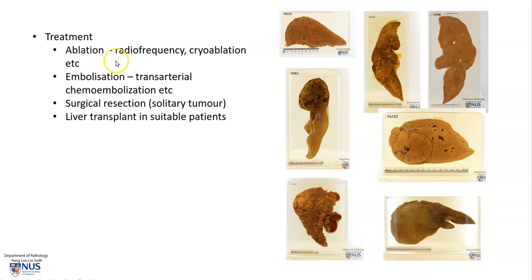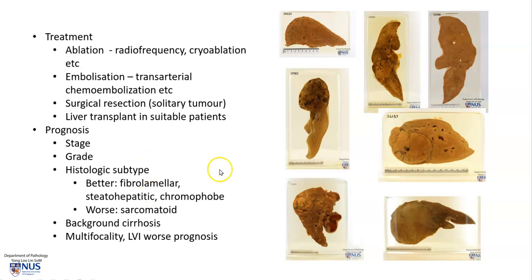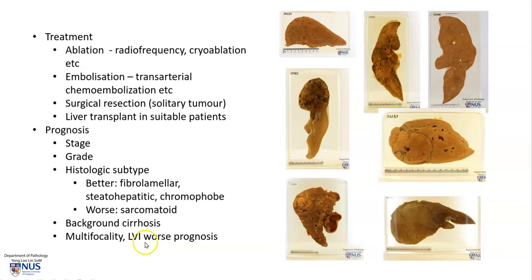Treatment has several modalities: ablation, embolization — for example transarterial chemoembolization — or surgical resection, especially if the tumor is solitary and liver function is still good. In suitable patients, liver transplantation may also be considered. The prognosis depends on the stage, the grade, and the histologic subtype. Subtypes with better prognosis include fibrolamellar, steatohepatitic, and chromophobic HCC, while sarcomatoid HCC carries a worse prognosis. The presence of background cirrhosis, multifocality, and lymphovascular invasion all herald a worse prognosis.